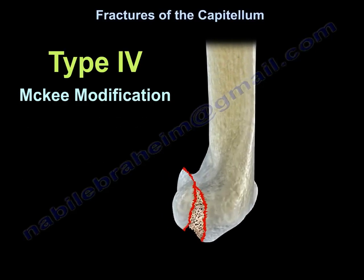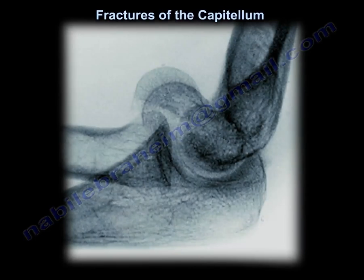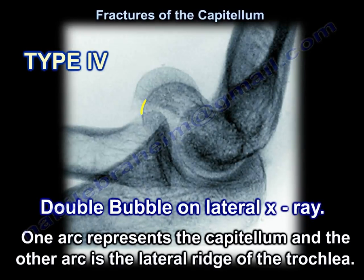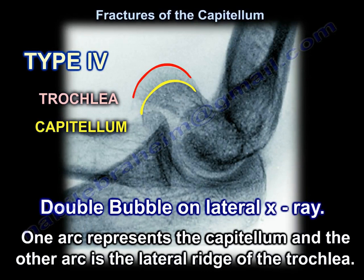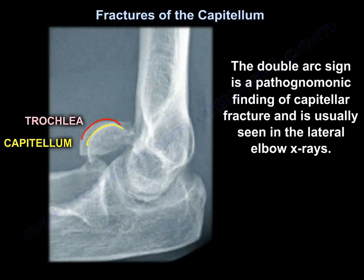On the lateral x-ray of the elbow, you can see a double bubble or double arc sign. One arc represents the capitulum and the other arc is the lateral ridge of the trochlea. The double arc sign is the pathognomonic finding of a capitular fracture and is usually seen on the lateral elbow x-ray.